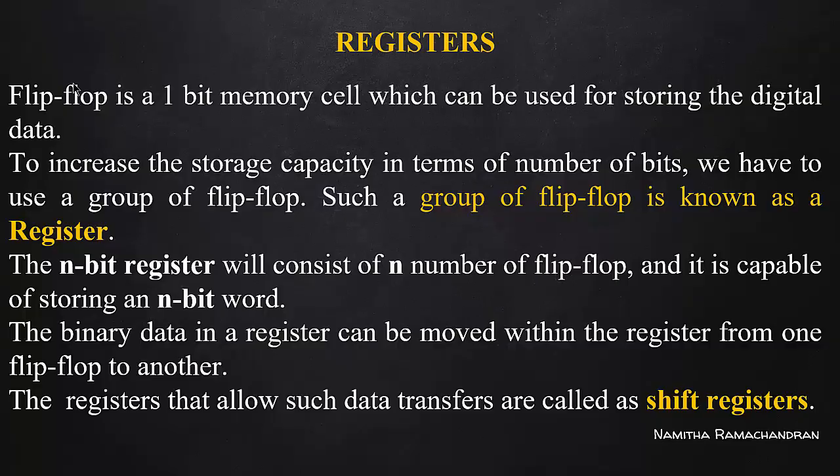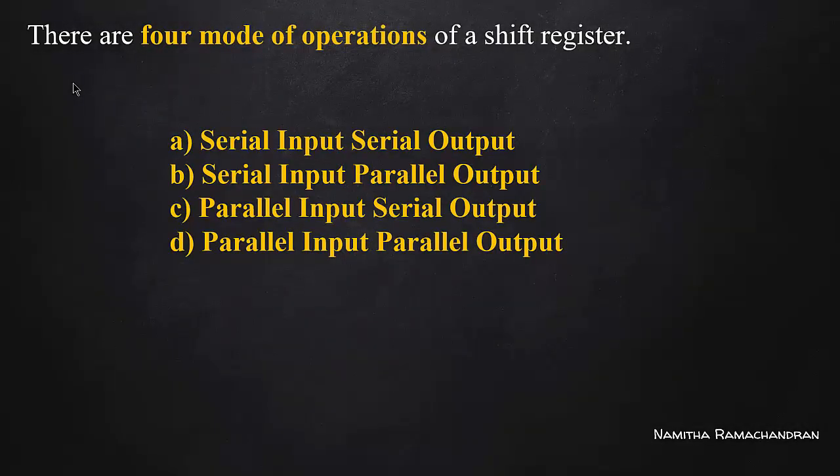We call it shift registers. We call it four types of registers: serial input serial output, serial input parallel output, parallel input serial output, and parallel input parallel output. These are the four types of registers. For serial data communication and transmission, we use the serial input and serial output type.